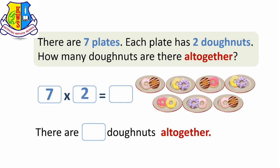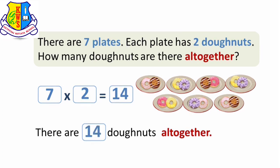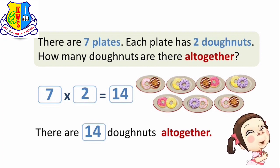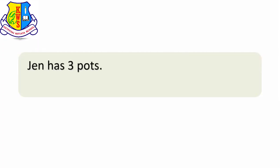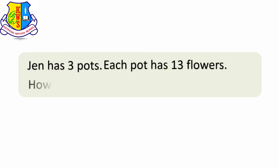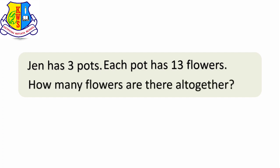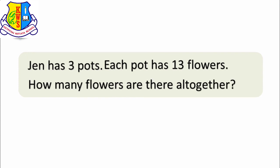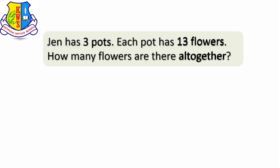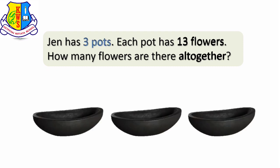There are 14 donuts all together. Jen Jen has 3 pots. Each pot has 13 flowers. How many flowers are there all together? We understand there are 3 pots and each pot has 13 flowers.